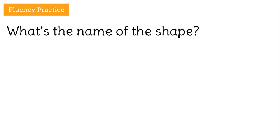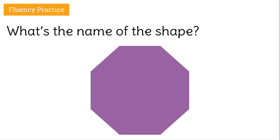Ready for a challenge? Try this on for size. This looks awfully familiar — you may have seen this shape whenever you look at a stop sign. It has eight sides. Something I know that has eight tentacles is an octopus. That gives us a clue. This is an octagon because it has eight sides.